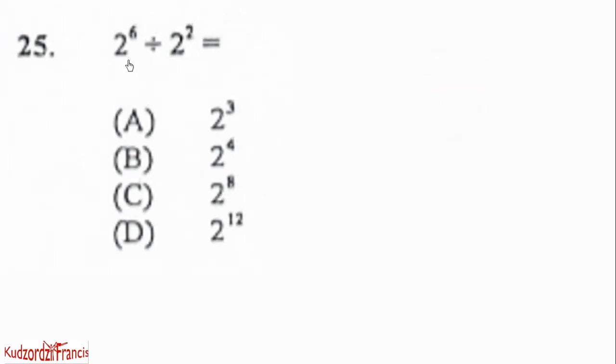Now option 25. We have 2 exponent 6 divided by 2 exponent 2. So you remember that law of indices A exponent M divided by A exponent N. You write down one base, then you subtract the exponent. So the same thing you apply here. So this is what we have. The bases are the same, so we subtract the exponent 6 minus 2, give you 4. So the correct answer will be 2 exponent 4.